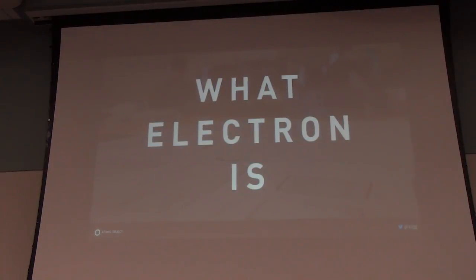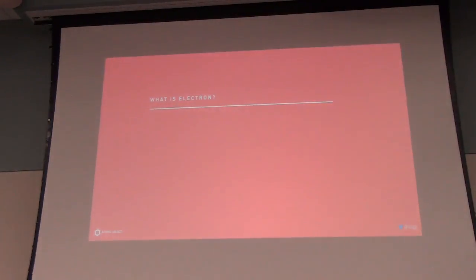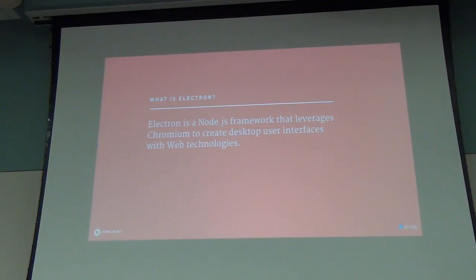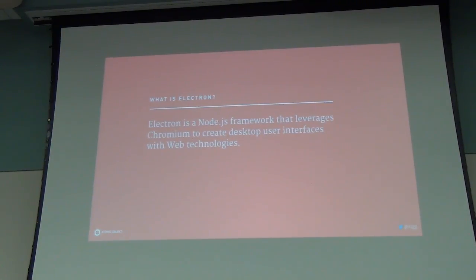Electron is a Node.js framework that leverages Chromium — which is the web browser engine inside Google Chrome — to create desktop user interfaces using web technologies. Basically, you are writing a program in Node.js that runs on your desktop machine, and your front end is not in the user's web browser, but in a window powered by the same engine that powers Google Chrome.